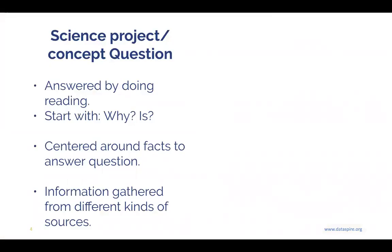It's helpful to take a step back and think about the two different kinds of questions that we ask in science. There's the kind of question we ask when we're doing a science project or have a question about a concept. These questions are most often answered by doing reading about the topic that we're interested in. The actual question frame starts with 'why' or 'is' type question words, and they're often centered around facts. The information is gathered from different kinds of sources that help us answer the question for our science project or a question about a science concept.